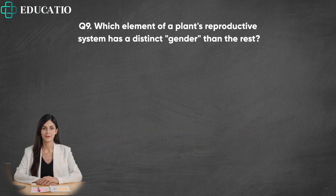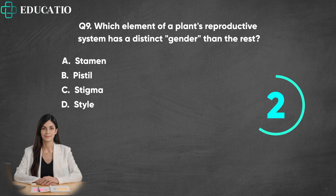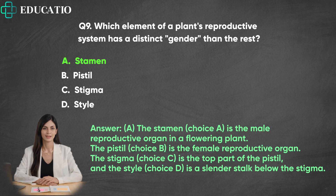Question 9. Which element of a plant's reproductive system has a distinct gender than the rest? A. Stamen. B. Pistil. C. Stigma. D. Style. Answer: A. The stamen is the male reproductive organ in a flowering plant. The pistil (Choice B) is the female reproductive organ. The stigma (Choice C) is the top part of the pistil, and the style (Choice D) is a slender stalk below the stigma.